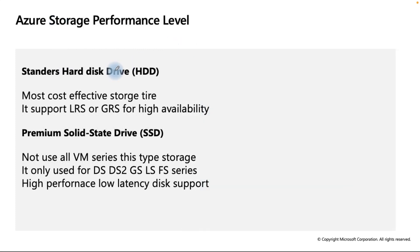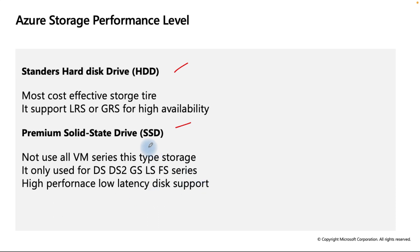There are two performance levels in Azure Storage: Standard and Premium. Standard is the most cost-effective, supporting LRS and GRS for high availability. LRS means Locally Redundant Storage and GRS means Geo-Redundant Storage. Premium uses SSDs and is not supported for all VM series — it supports DS, DS2, GS, LS, and FS series — providing high performance and low latency.